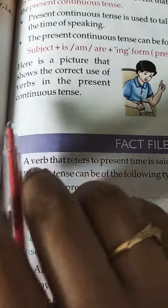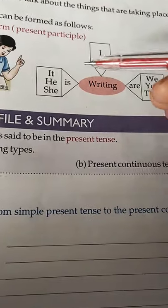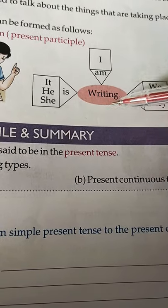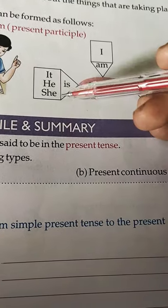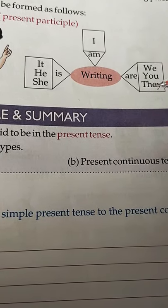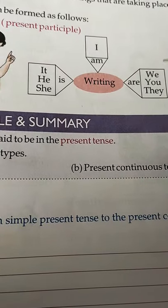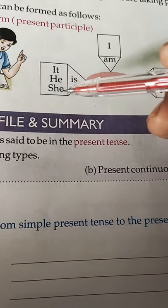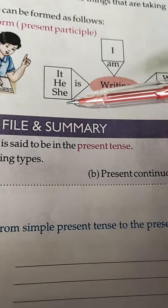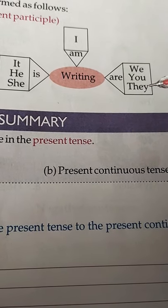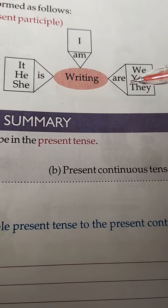Here is a picture that shows the correct use of verbs in the present continuous tense. You can see here: I am writing, he is writing, she is writing, we are writing, you are writing, they are writing. Singular aur plural — inke saath kaunsa helping verb use ho raha hai. It, he, she — singular subjects hain, so we use 'is'. You, we, they — plural subjects hain, then we use helping verb 'are'. I ke saath hamesha 'am' use hota hai.